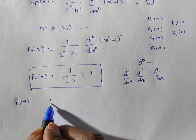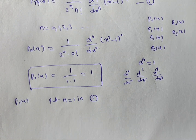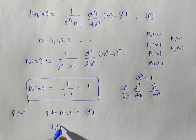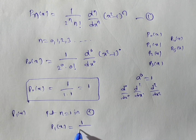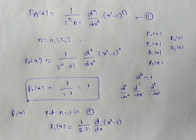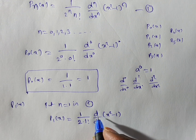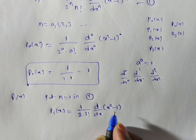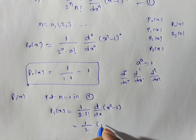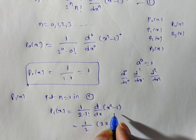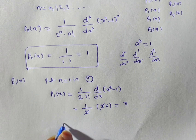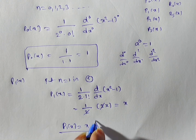Now, coming to P1 of x. For that, put n equal to 1 in equation number 1, the Rodrigues' formula. Substituting n equal to 1, we have P1 of x equal to 1 by 2 power 1, which is 2, into 1 factorial, into d by dx of x squared minus 1, whole to the power of 1. So it is 1 by 2 into 1 factorial — 1 factorial is 1, so the denominator is 2. One-time differentiation of x squared minus 1 gives 2x. The 2 in numerator and denominator cancel, giving x. So P1 of x is equal to x.